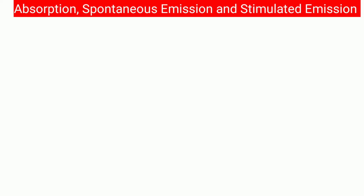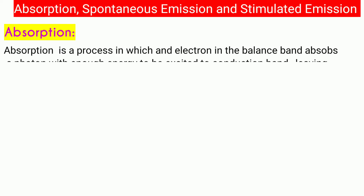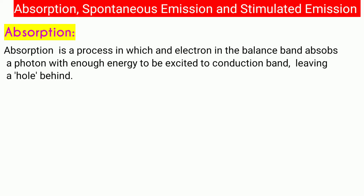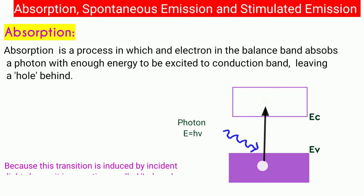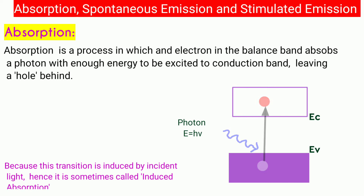Absorption is a process in which an electron in the valence band absorbs a photon with enough energy to be excited to the conduction band, leaving a hole behind. Because this transition is induced by incident light, it is sometimes called induced absorption. There is no such thing as spontaneous absorption. The process of induced absorption is shown in the diagram.